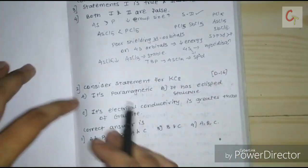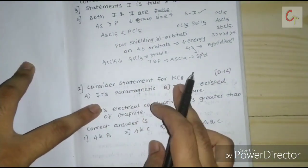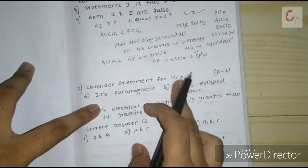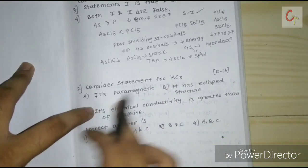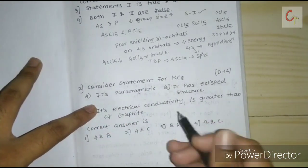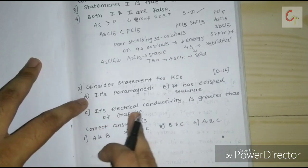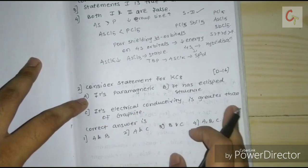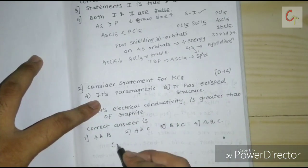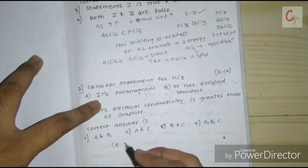The next question considers statements regarding C8K, potassium graphite. The statements are: it is paramagnetic, it has an eclipsed structure, and its electrical conductivity is greater than that of graphite. C8K is an intercalation compound of graphite.